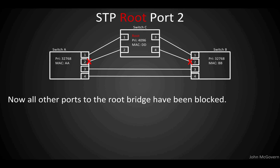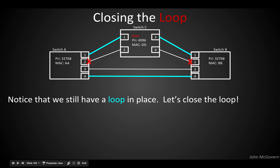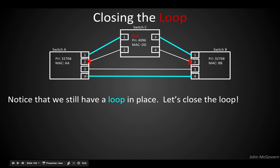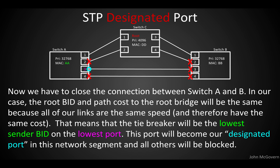All ports that are not the root port have been blocked — port 2 in each case. So one port has the best path to the root — that's the root port. But notice that we still have a topology loop in place through these two open links between switches A and B. You could still forward broadcasts around and around, so we need to fix that. The next step is to determine what the designated port will be between switch A and switch B.